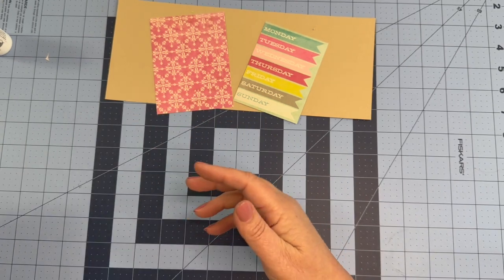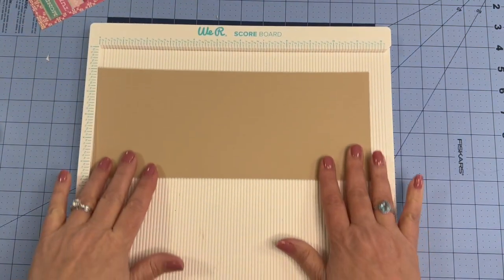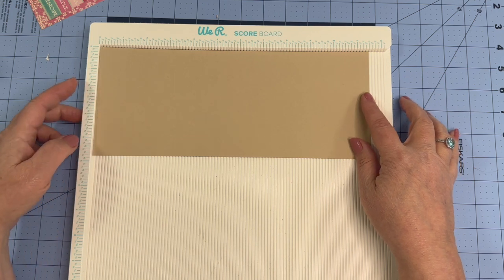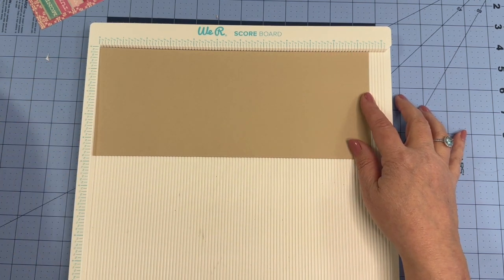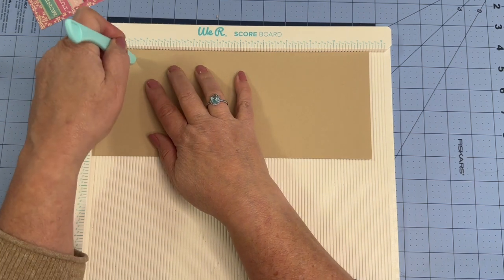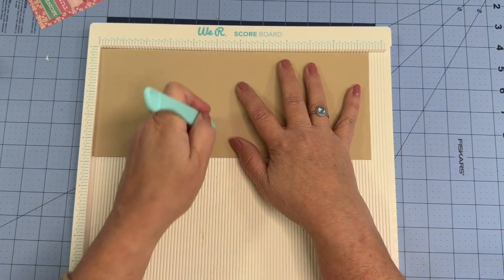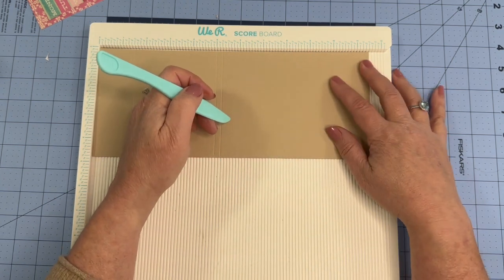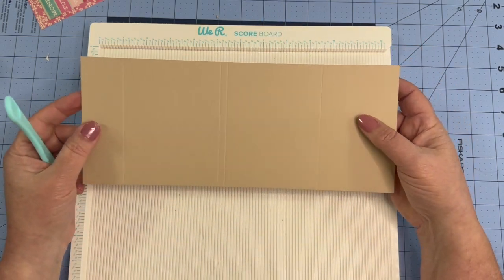We need to get our scoreboard out and score our cardstock. This cardstock was cut at 11 and a half inches by four and three quarters inches. We're going to score it at one and a half, at five, at five and a quarter, and at eight and three quarters. That's all the scoring that we need to do.